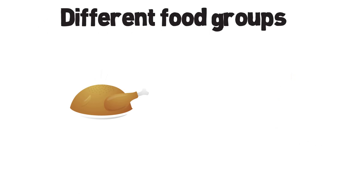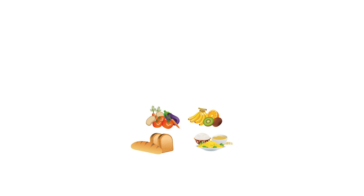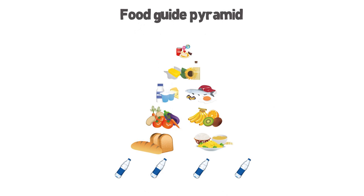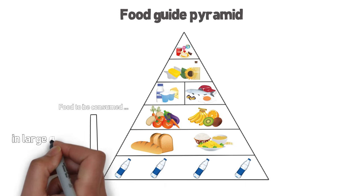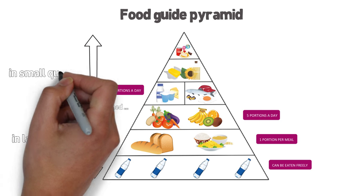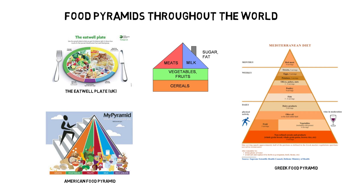Different Food Groups. Regarding nutrient composition, different food groups can be distinguished. A food guide pyramid, or diet pyramid, is a diagram representing food consumption. The bottom part of the pyramid represents foods that could be consumed in large amounts, and the top part of the pyramid shows foods whose consumption should be limited. There are different kinds of food guide pyramids throughout the world.